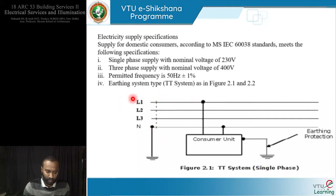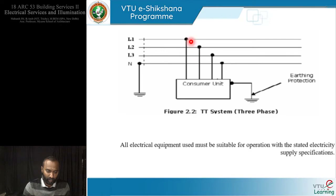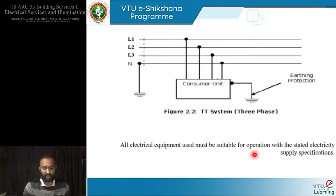We have Line 1 connected to the consumer unit, neutral connected to the consumer unit, earthed — and also the neutral separately is also earthed. All the electrical equipment used must be suitable for operation within the stated electricity supply specifications.